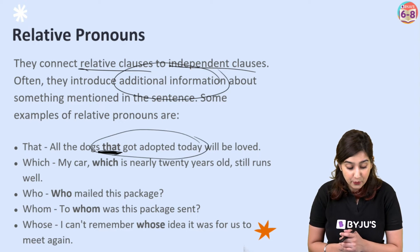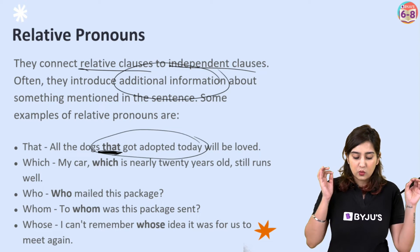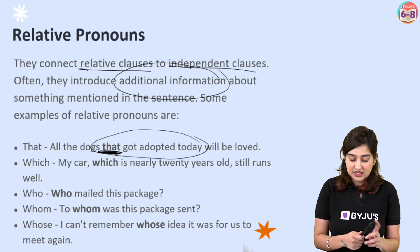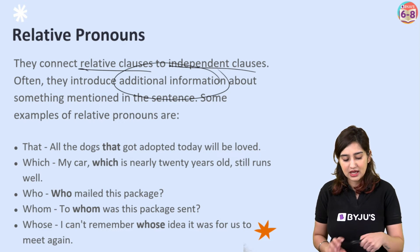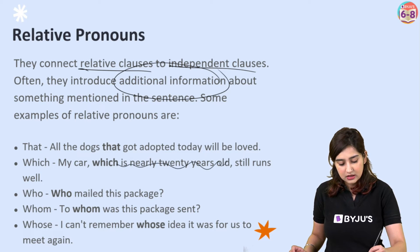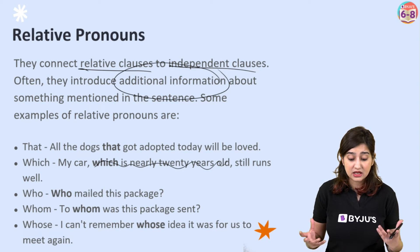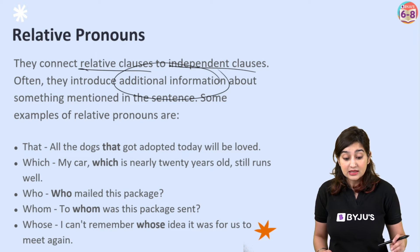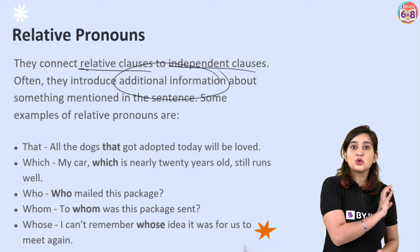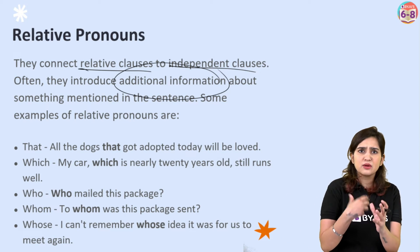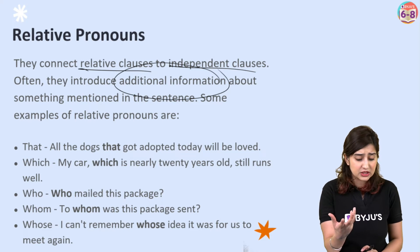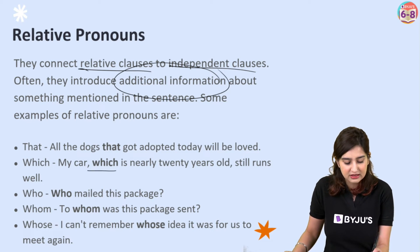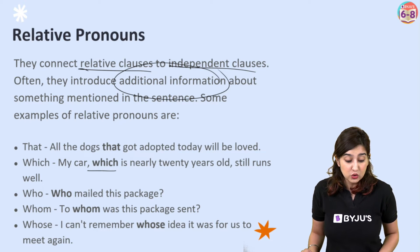More examples. Which: 'My car, which is nearly 20 years old, still runs well.' The additional information 'which is nearly 20 years old' — if you remove it, 'My car still runs well' still makes sense. But it's important to note that it's 20 years old and still runs well, so you introduce this additional information using the relative pronoun 'which'.